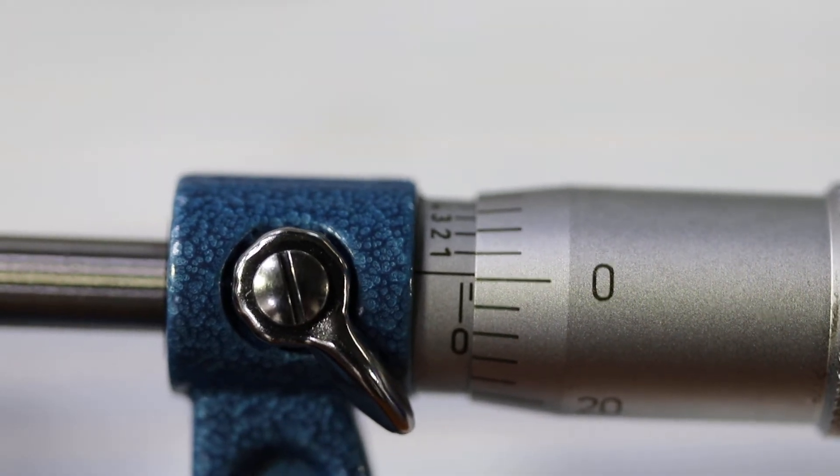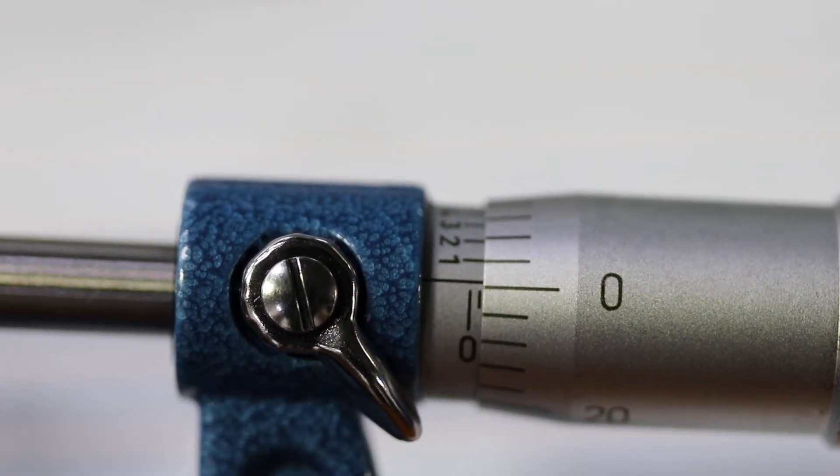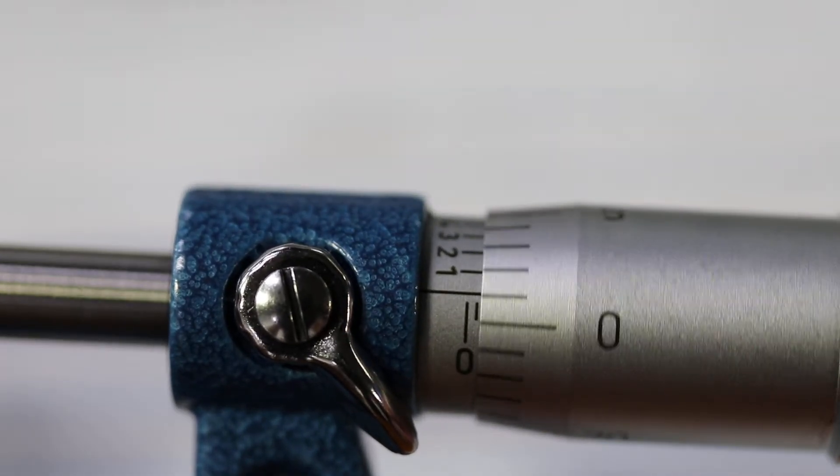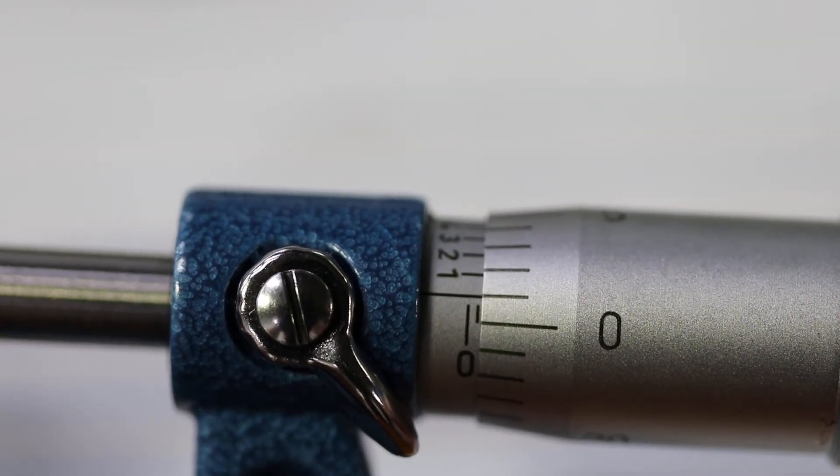So that's 25,000, so 0.025. If we turn this to here, 0.026.